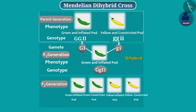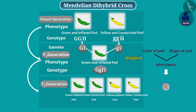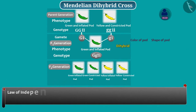Mendel found that in the parent generation, inflated pods were green in colour and constricted pods were yellow in colour. But in F2 generation, there were pods which were inflated but yellow in colour. Similarly, there were pods which were constricted but green in colour. This suggests that the inheritance of colour of pod and shape of pod do not affect each other — meaning that the colour and shape of the pod is inherited independently. For this, the factors governing them have been segregated independently. On the basis of this understanding, Mendel proposed a third law of inheritance, called the law of independent assortment.